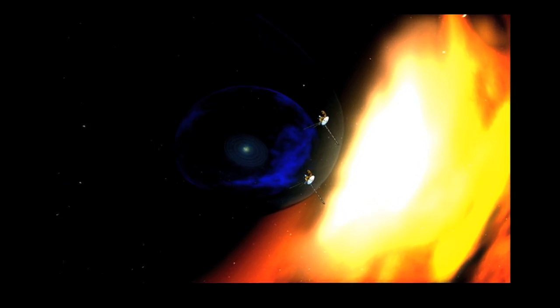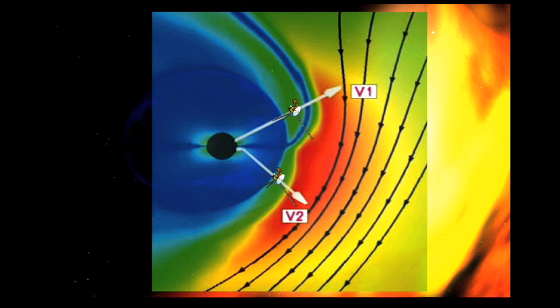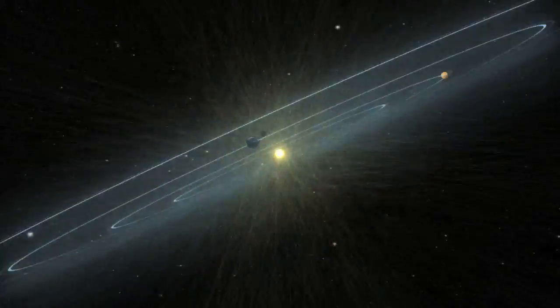However, when Voyager 2 crossed this boundary much closer to the sun than expected, we received a picture of a squashed heliosphere rather than a round bubble.